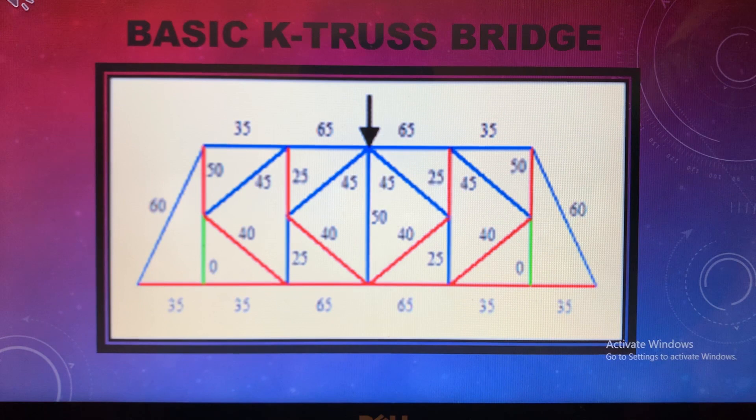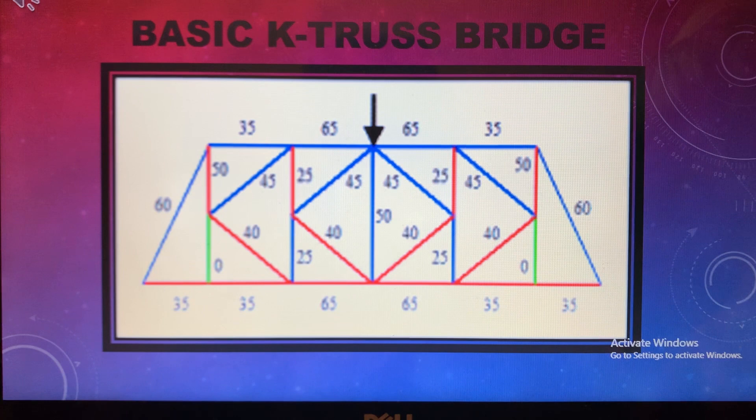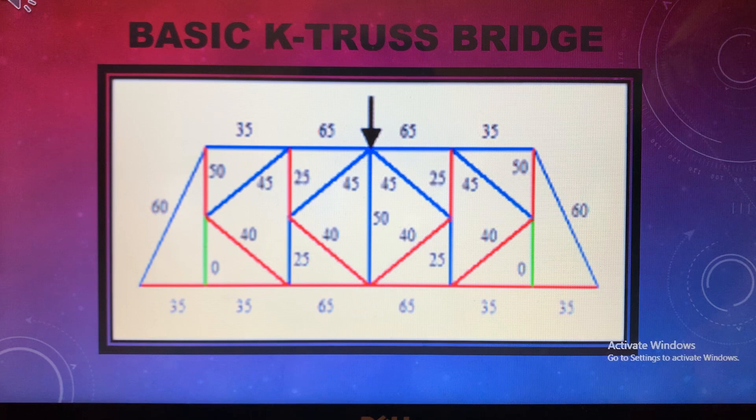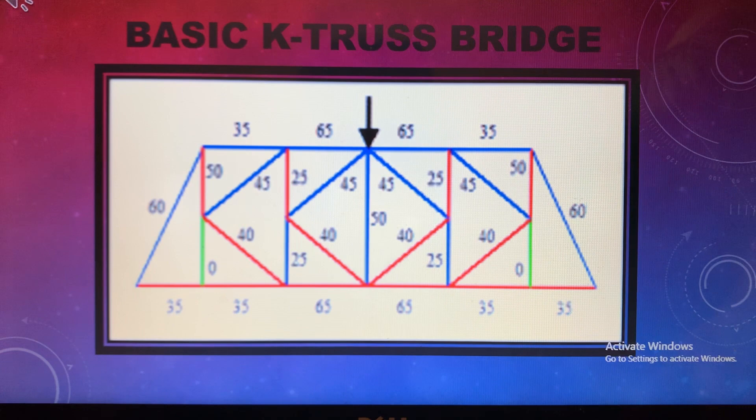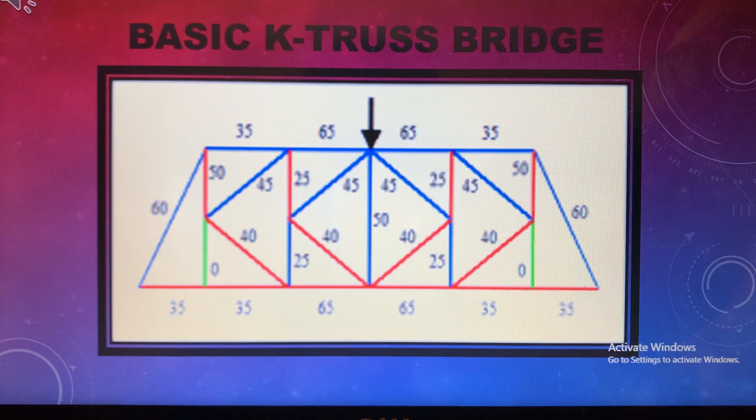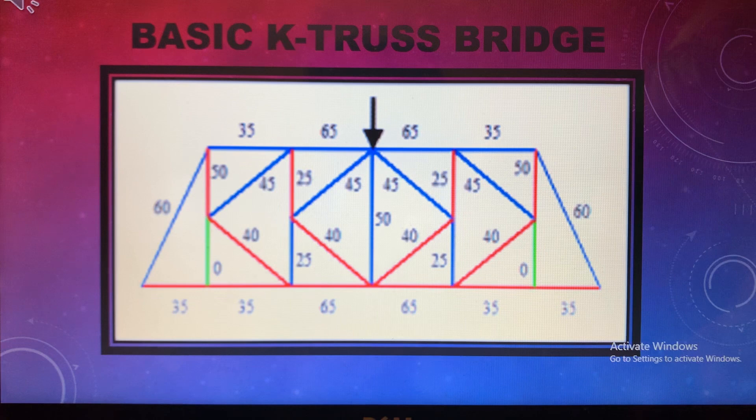This is the final diagram for the K-truss bridge. Blue is still compression, red is tension, and green is zero, meaning no force is being applied there. The K-truss gets its name because of how the beams are shaped to look like a K — you can see there's a K, another K, a straight line in the middle, and opposite K's on either side. This pattern can extend or shorten depending on how large the bridge is.